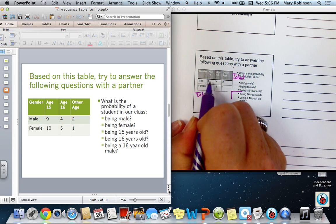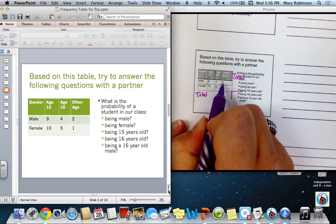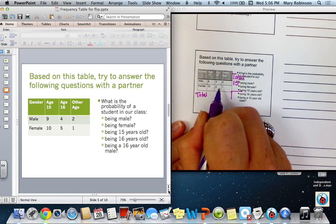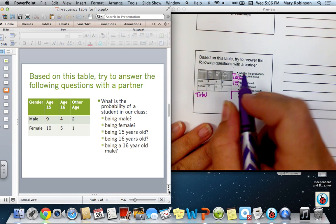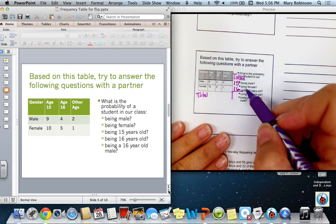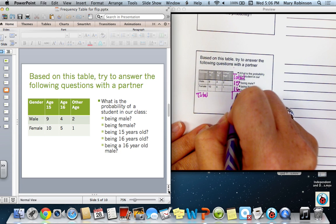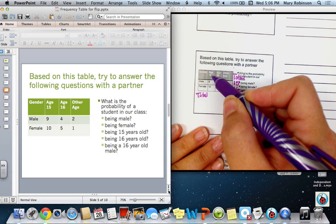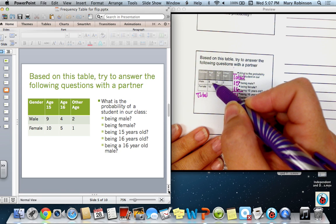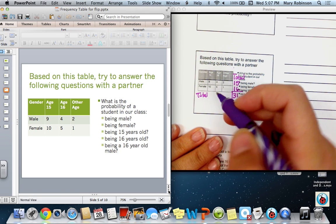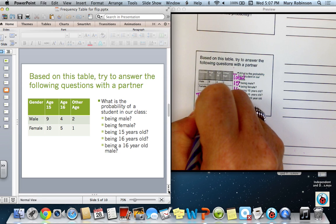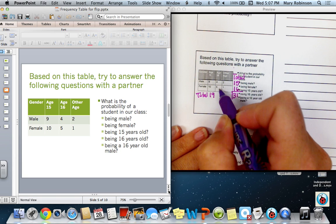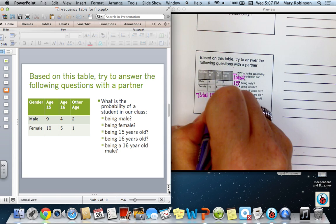I will now add 9 plus 4 plus 2 to get 15. Then add 10 plus 5 plus 1 to get 16. Now if we total up 15 and 16, we should end up with 31.